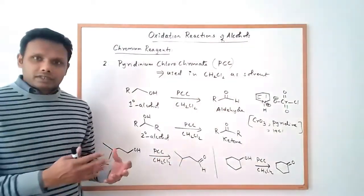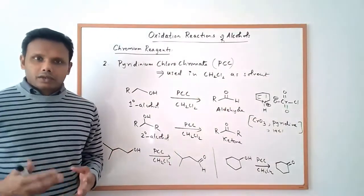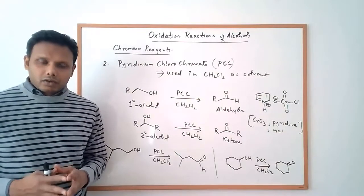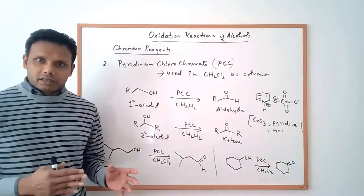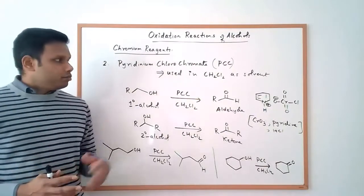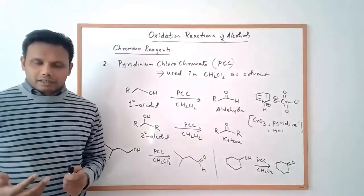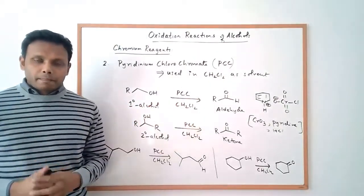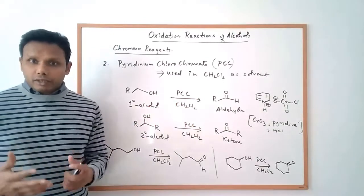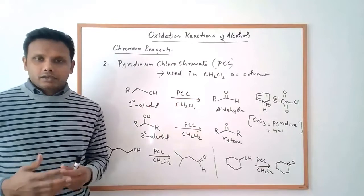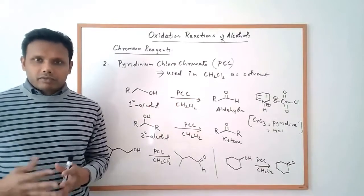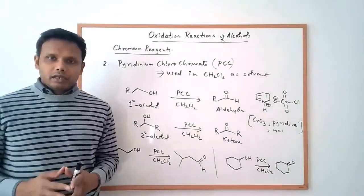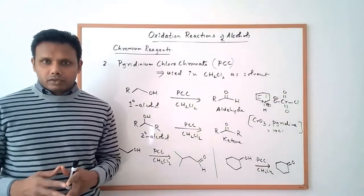Overall, we've discussed the use of chromium reagents for oxidizing alcohols. Chromic acid is a stronger oxidizing agent that converts primary alcohols all the way to carboxylic acids. PCC, on the other hand, is a milder and selective oxidant that converts primary alcohols into aldehydes. Chromium reagents have traditionally been used, but they are toxic and corrosive, so synthetic chemists have developed newer, milder, less harmful reagents that we will look at in upcoming videos.